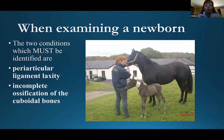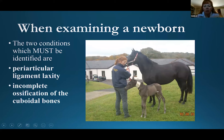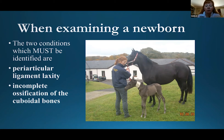When we're looking at newborn foals there are two things we simply can't miss. If we identify them the outlook is really good; if we don't identify them then the likelihood of any sort of athletic function is very poor. Those two conditions are periarticular ligament laxity and incomplete ossification of the cuboidal bones. Generally, if you have a nice-sized mare and she produces something roughly the size of a rabbit, do consider that perhaps that foal's skeleton is not completely ready to go.